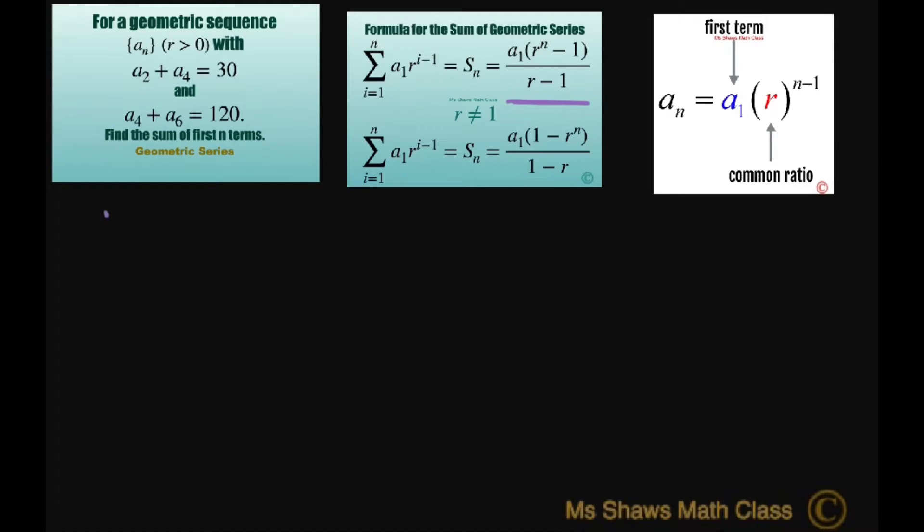So to do that, we're going to look at a₂ plus a₄ and rewrite that with R. So a₂ is really a, the first term, times your common ratio. And then a₄ is your first term times your common ratio three times, so R³. And this is going to equal 30. We can factor out an aR and this would give me 1 plus R² equals 30.